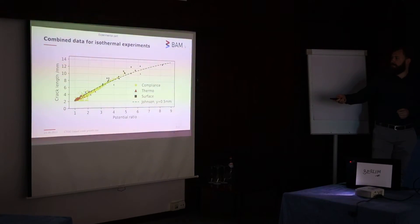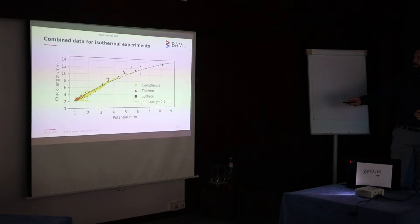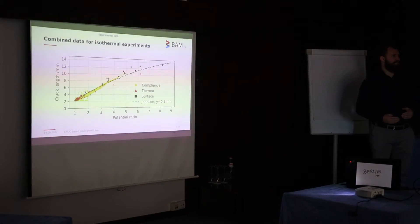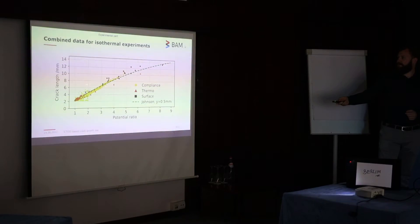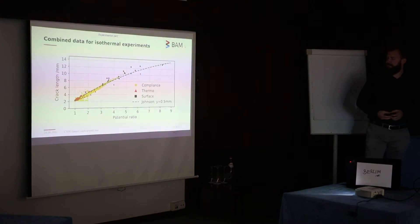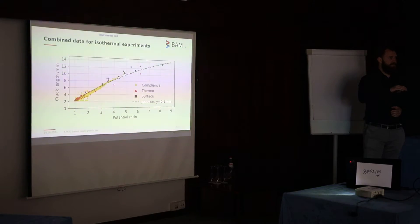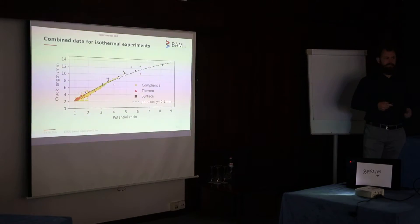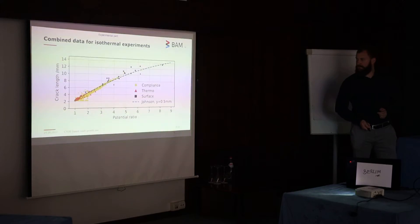Here we can see the combination of all isothermal experiments — all data gathered — and an exemplary Johnson function with a y-value of 0.5. In red are the thermography data readings, which are slightly below the other readings since we are only seeing the outside of the specimen. In black is the heat-tinted surface after the experiment, and in yellow the compliance data with some minor artifacts. Overall the data shows good agreement. We fit the Johnson function for each specimen individually to its own dataset, giving a better crack growth reading, which is a necessary step given the scatter in our material.